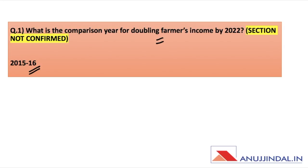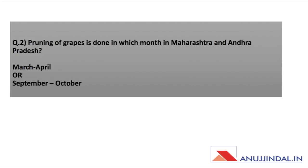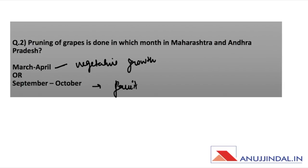Next question: pruning of grapes is done in which month in Maharashtra and Andhra Pradesh? There are two categories — March to April, related to vegetative growth, and September to October, which is for fruit pruning. Do mention in the comment section what options were given, so we can help guess the right answer.